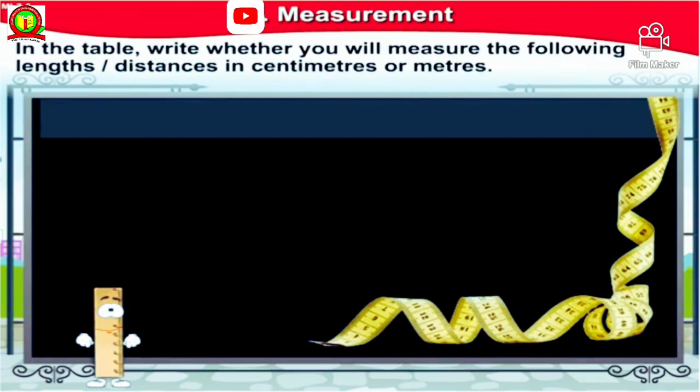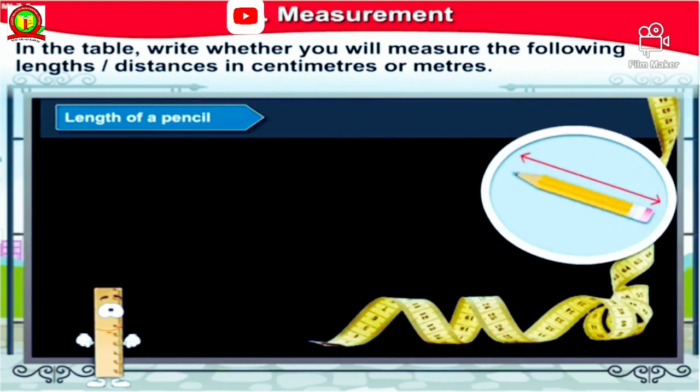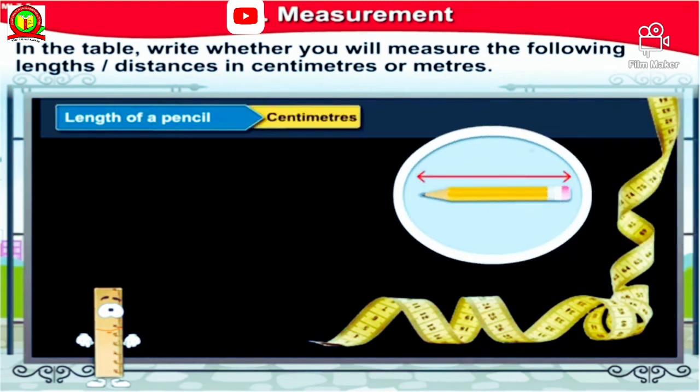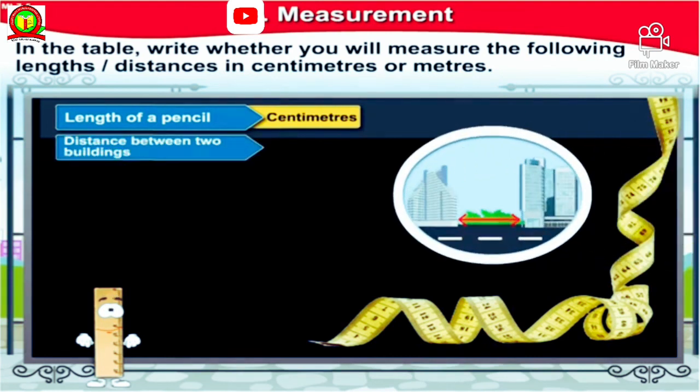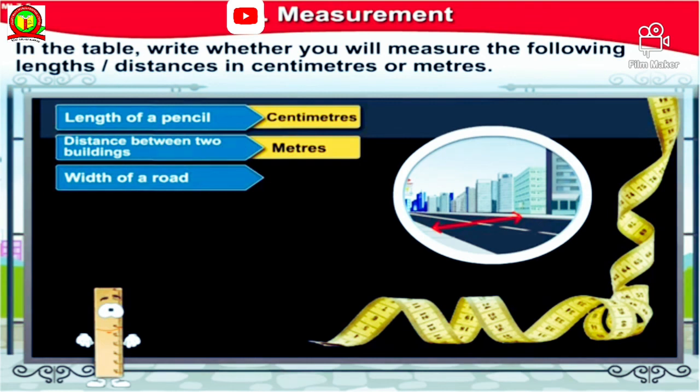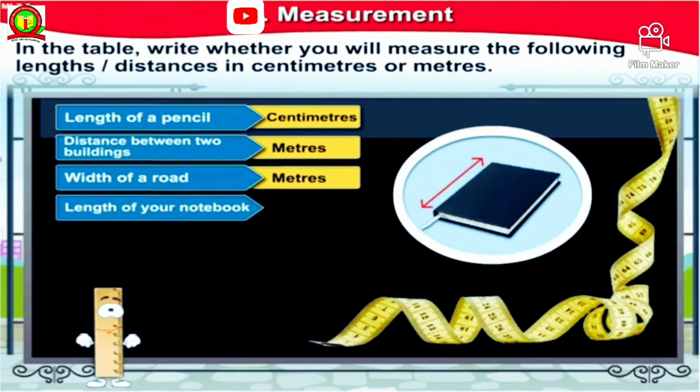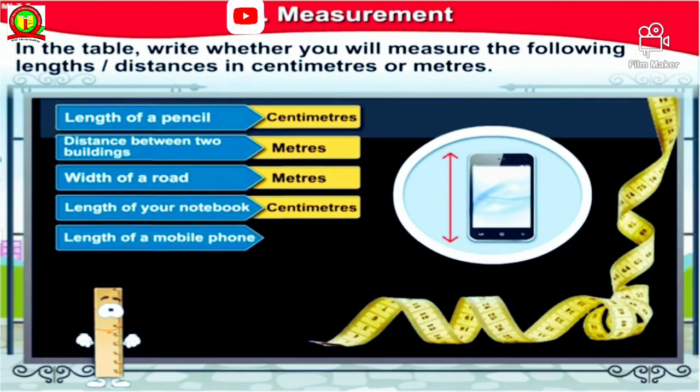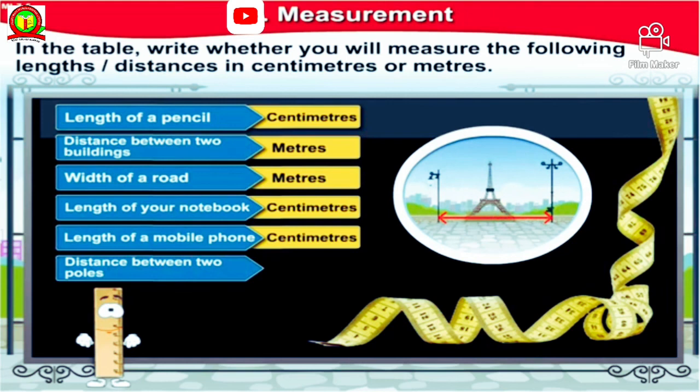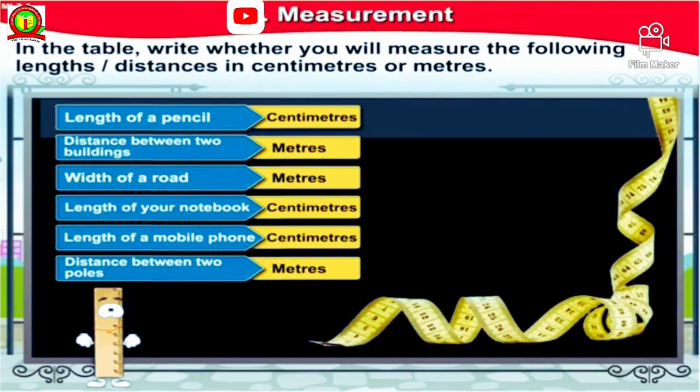In the table, write whether you will measure the following length or distances in centimeters or meters. Length of a pencil, well that has to be measured in centimeter. Distance between two buildings, that has to be measured in meters. Width of a road, that has to be measured in meters as well. Now the length of your notebook, can you take a guess? You're right, will measure it in centimeters. Length of a mobile phone, that's correct, it has to be measured in centimeters. Distance between two poles, that has to be measured in meters as well.